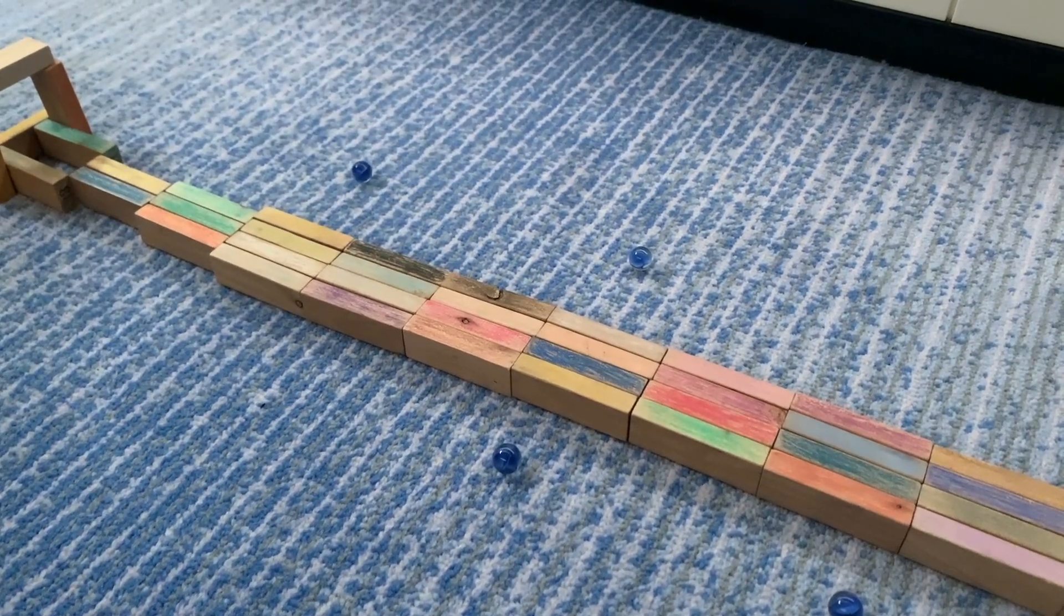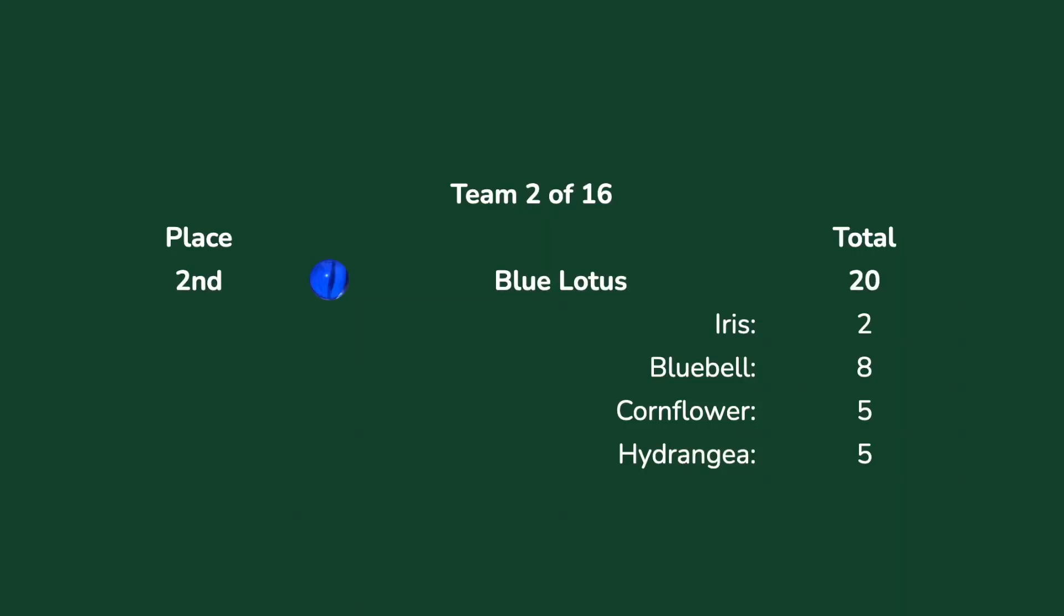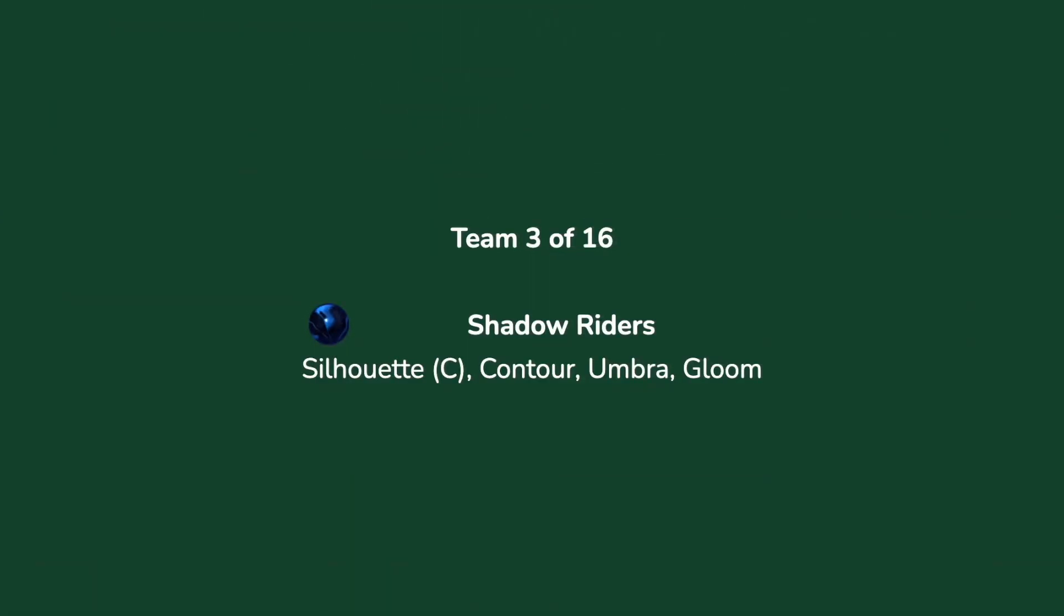Bluebell, their second marble, getting eight. For the other two, five. That's only 20, an average of five per marble. It is certainly not what the Blue Lotus hoped for—they've got to be hoping for more than that.